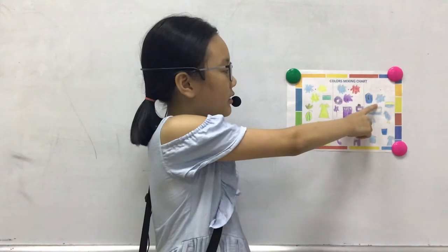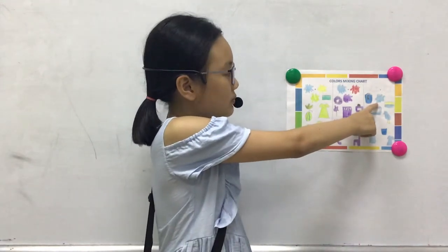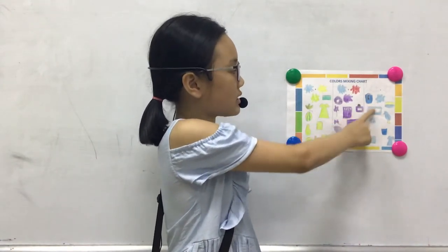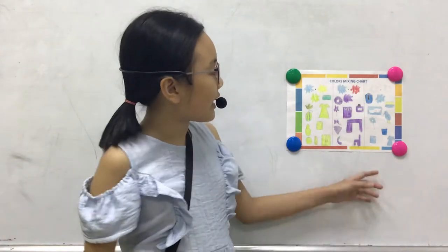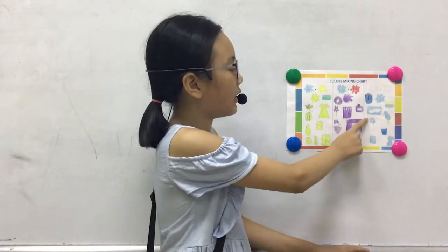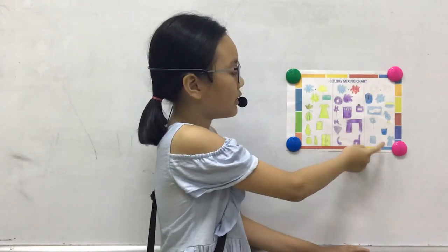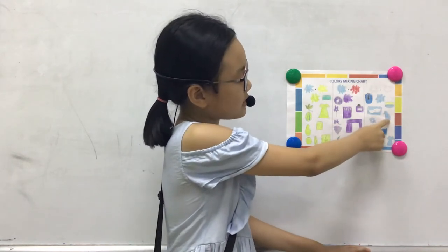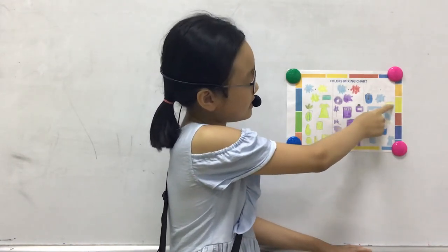My last color is blue. Blue is a primary color. Blue is a cool color. I can see blue in the sky, flowers, birds, and the sea.